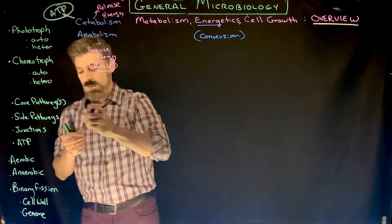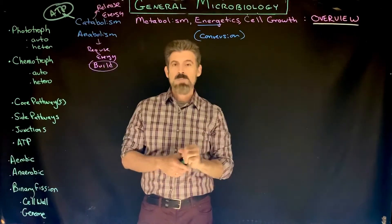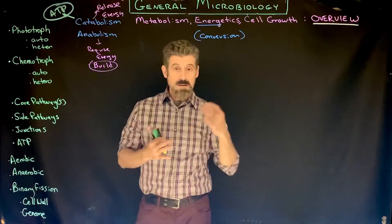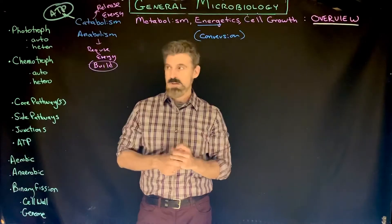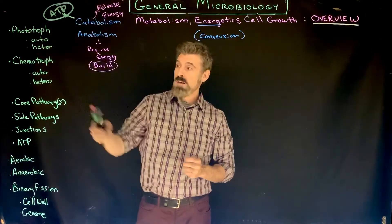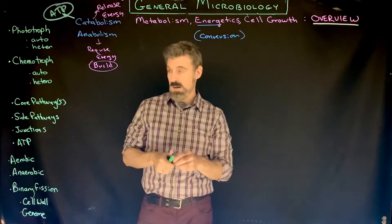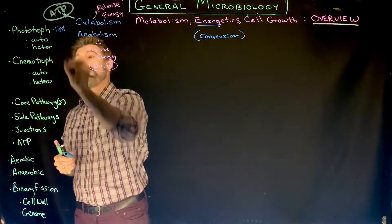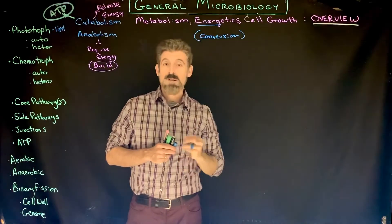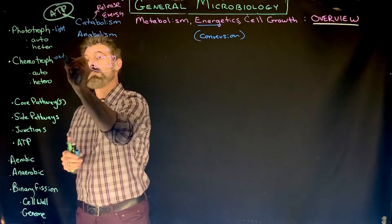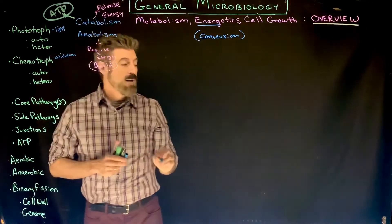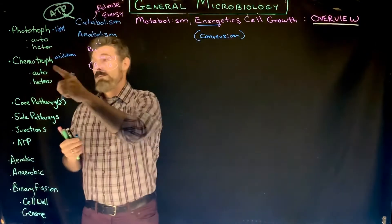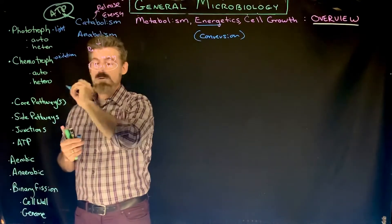ATP is the molecule that cells are mostly going to use for active transport, building larger molecules, building the cell wall, and motion if they have flagella. So where does that energy come from? We have phototrophs and chemotrophs. Phototrophs get their energy directly from light, and chemotrophs get energy from oxidation events — the removal of electrons from molecules.